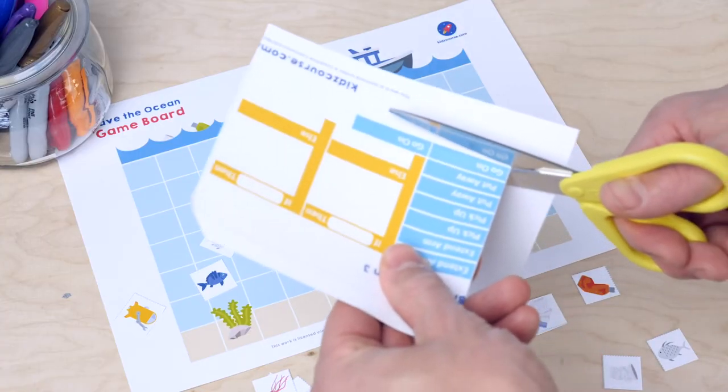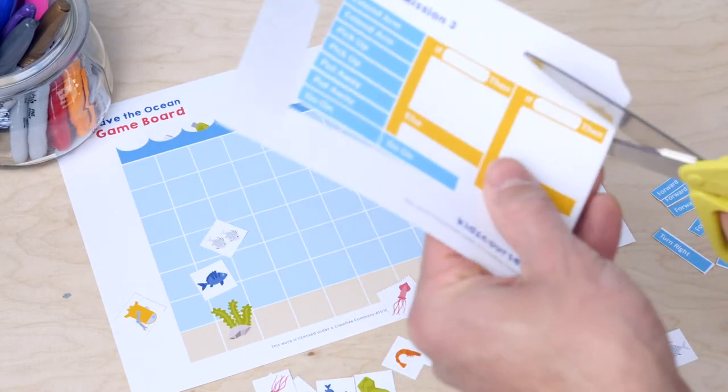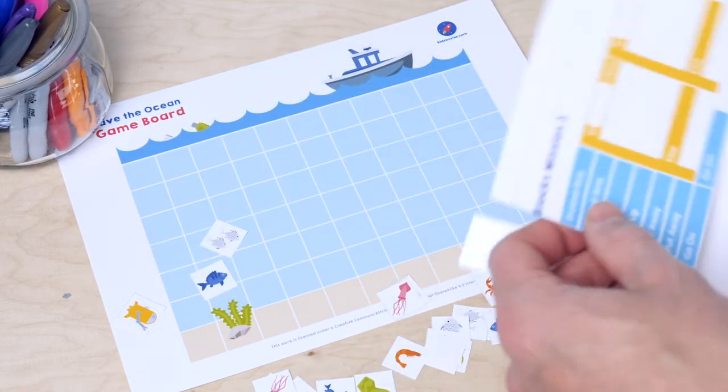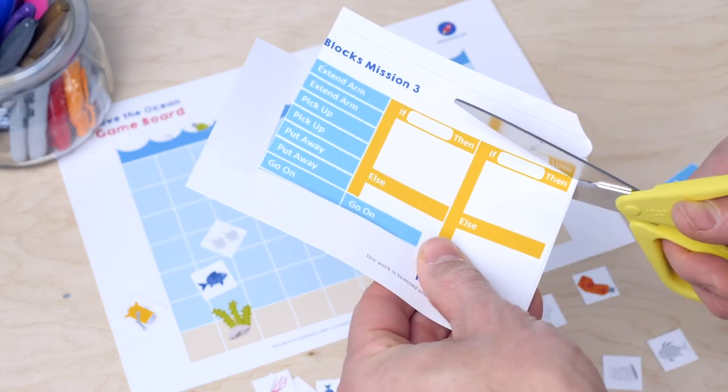Take your worksheet with the cards and the worksheet with the code blocks for Mission 3. Cut them out neatly and pause this video while you do that.